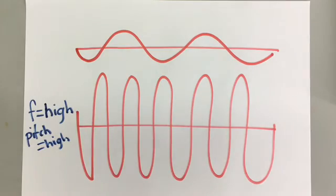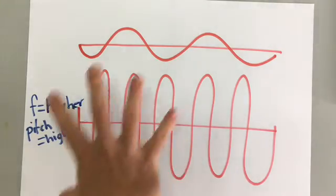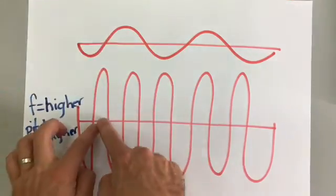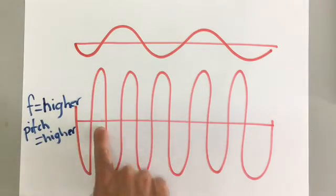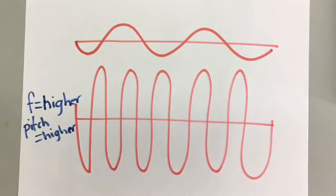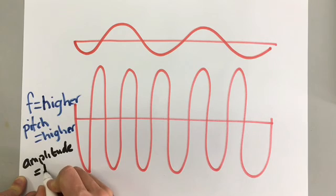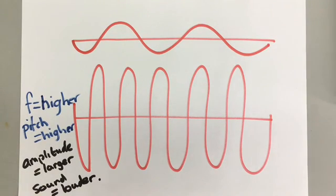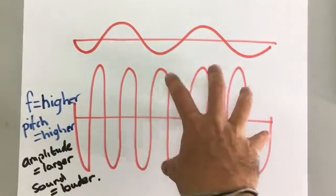So therefore this one, the pitch is lower. We also know that this one, the amplitude is smaller than this one. This one has an amplitude of that much compared with that much. So the amplitude, the height of the wave on this one is larger. So that means this one is louder. So this sound wave is a higher pitch and a louder sound.